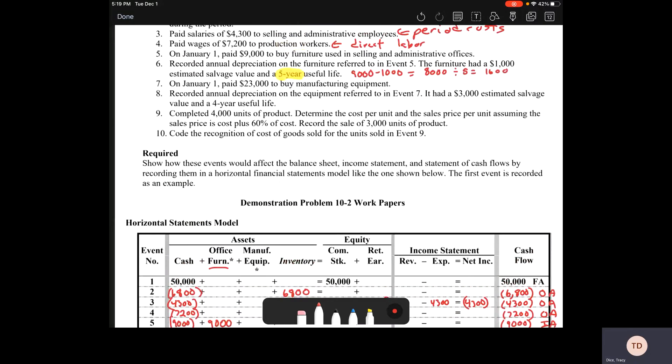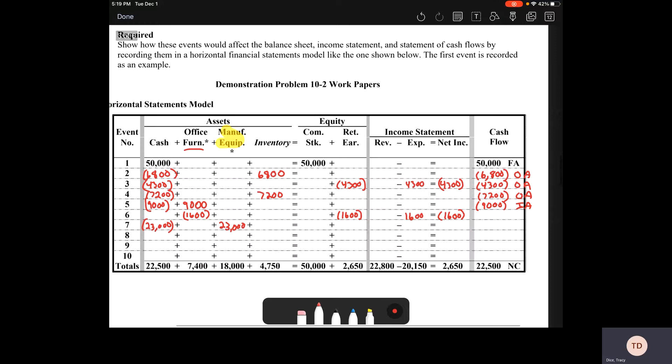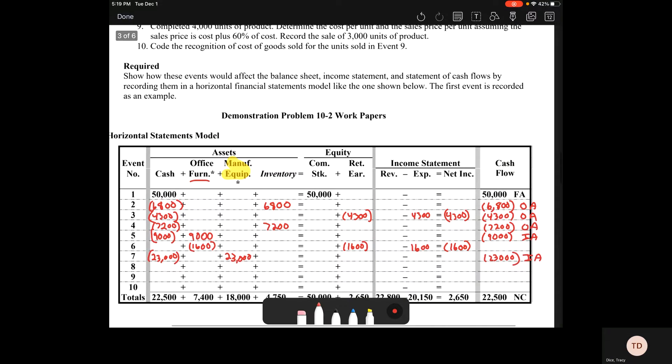Number seven. On January 1st, we paid $23,000 to buy manufacturing equipment. This equipment is used in the production of whatever product we are making. We've got that manufacturing equipment asset account. We're going to take $23,000 out of cash and put it into our manufacturing equipment. This is an asset exchange transaction. Because we have money coming out, it's got to come out of our cash flow. This is an investing activity because we are investing in capital equipment.